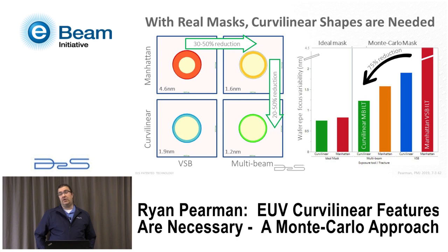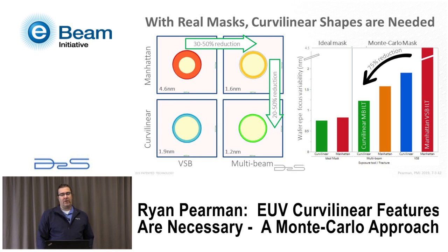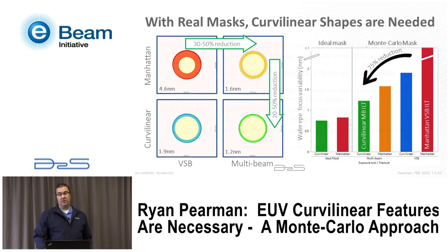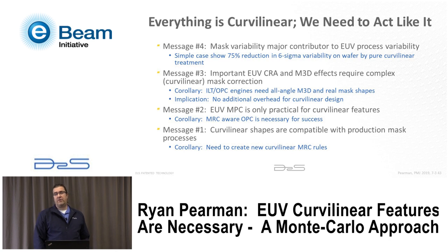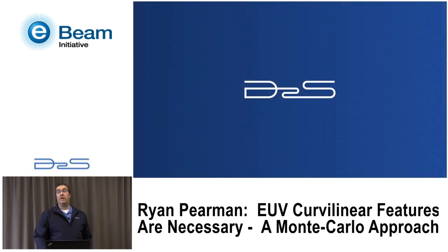Combining this data, going from Manhattan VSB ILT — which has a 4.6nm distorted process window — you can bring that down to about a 1.2nm process window by going to curvilinear shapes and printing with a new mask tool. That's about a 75% reduction in mask variability impact on process variability, a really compelling reason to move the industry toward curvilinear shapes for EUV. It may be too late for the initial production runs of EUV, but as we go forward into the second round, it's time for the industry to think about what it will take to make this move. Thank you very much.